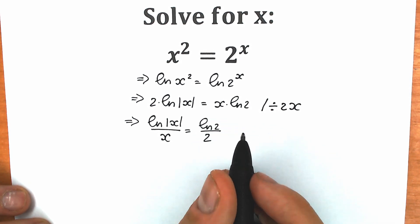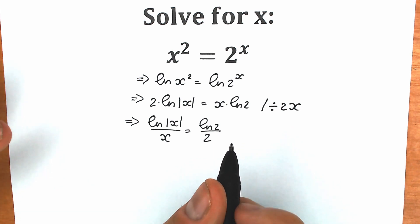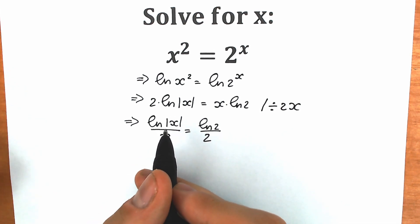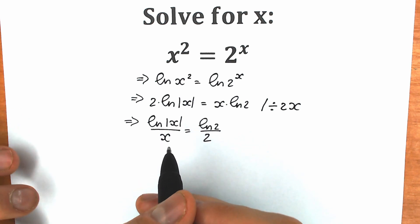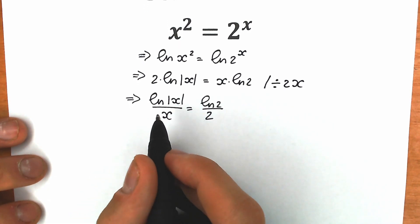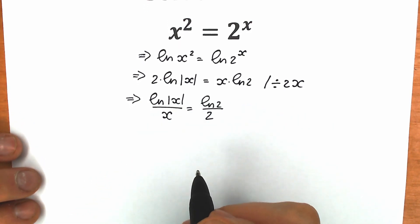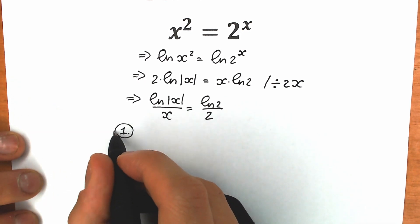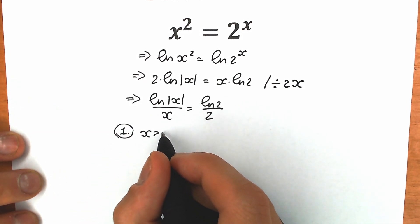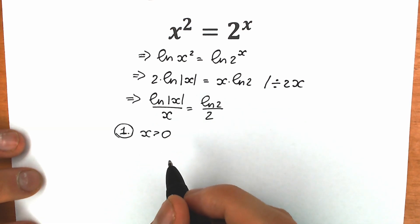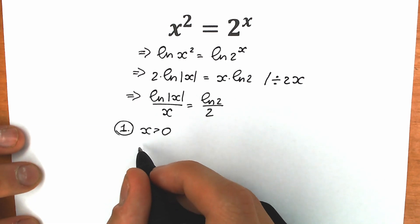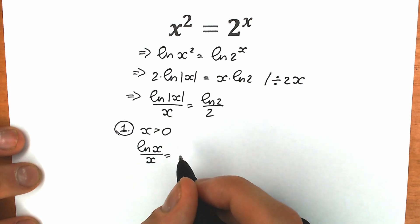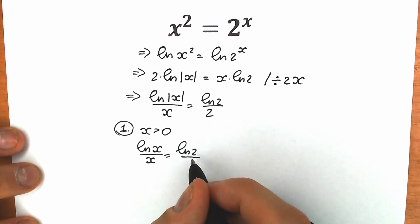Right now, let's look at this absolute value of x. If we're talking about absolute value, we need to consider two cases: the first one when x is positive, and the second one when x is negative. Let's start when x is positive — so x is greater than zero. As a result, we will cancel our absolute value of x, and we will have natural log x over x equal to natural log 2 over 2.